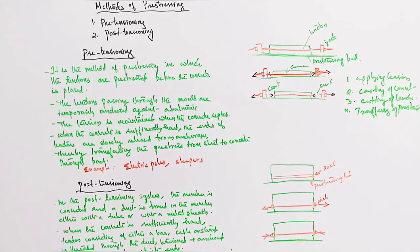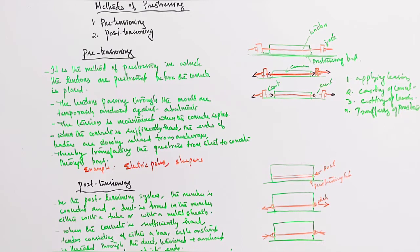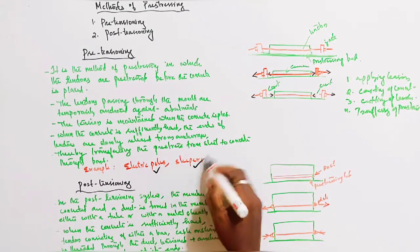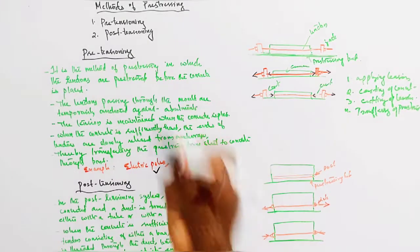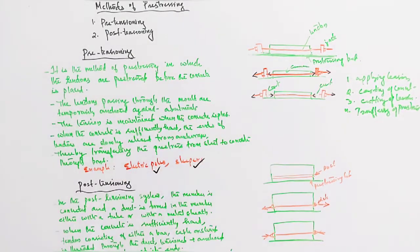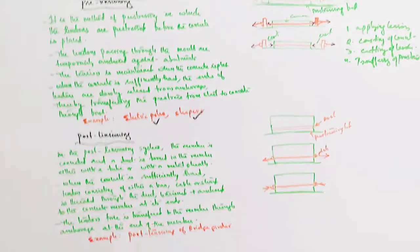Examples of pre-tensioning: electric poles and railway sleepers.